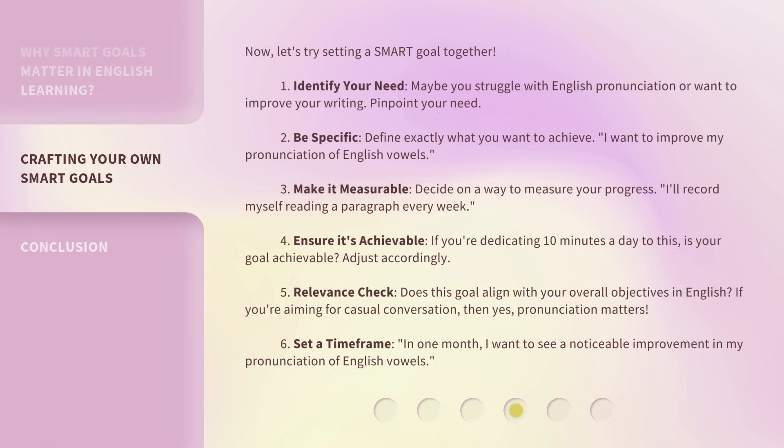Now, let's try setting a SMART goal together. 1. Identify your need — maybe you struggle with English pronunciation or want to improve your writing. Pinpoint your need. 2. Be specific: define exactly what you want to achieve. "I want to improve my pronunciation of English vowels." 3. Make it measurable: decide on a way to measure your progress. "I'll record myself reading a paragraph every week." 4. Ensure it's achievable: if you're dedicating 10 minutes a day to this, is your goal achievable? Adjust accordingly.